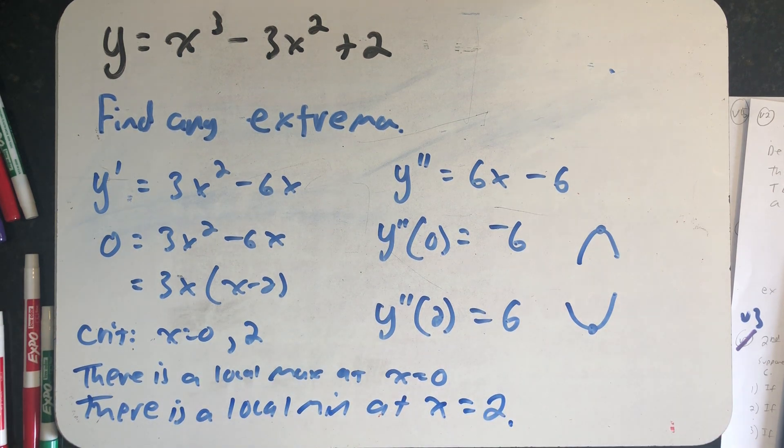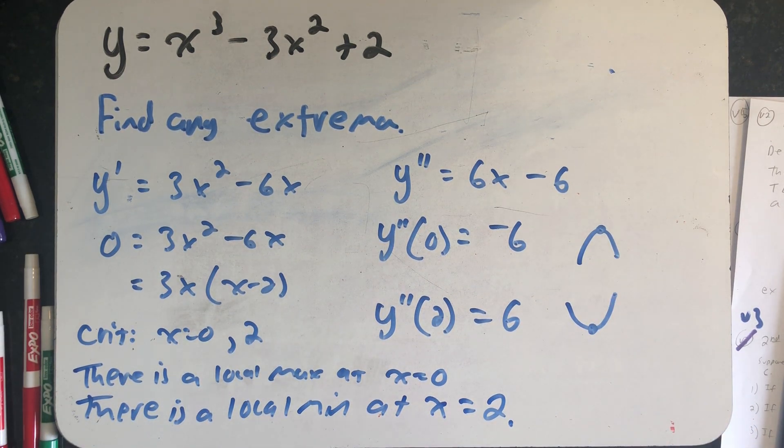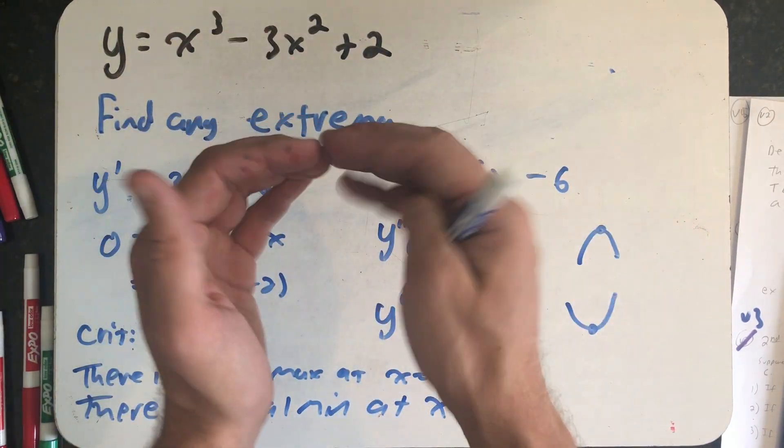And that's actually how I always think about the second derivative test for local extreme values. I always draw a little diagram indicating whether I have that concave up shape or concave down shape.